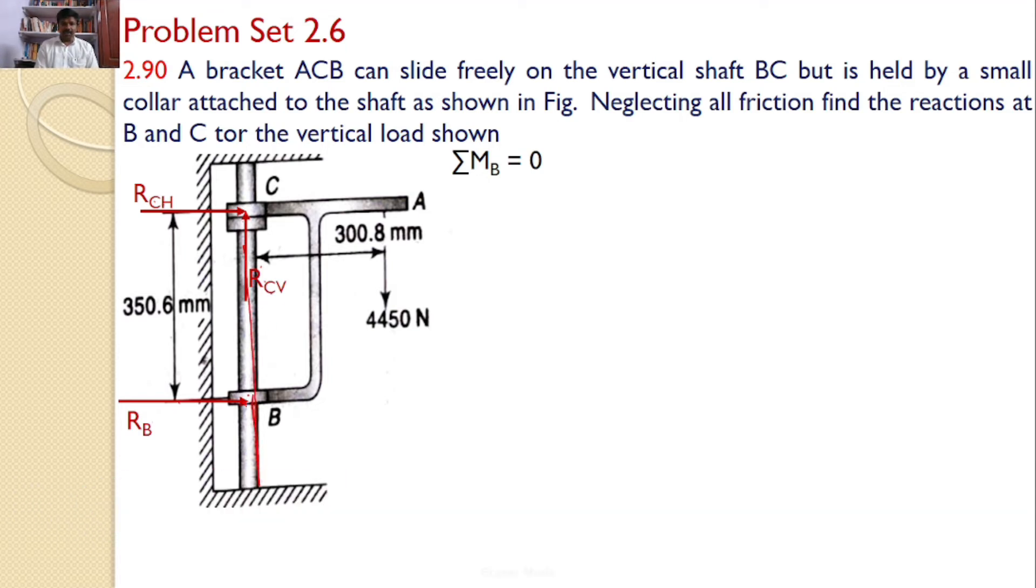Hence, RB and RCV will not introduce any moments. I can find the moments only with the RCH and with the 4450. RCH moment is in this direction, that is clockwise, and 4450 is also in this direction because I am taking the moments about point B. Both are acting in the clockwise directions.